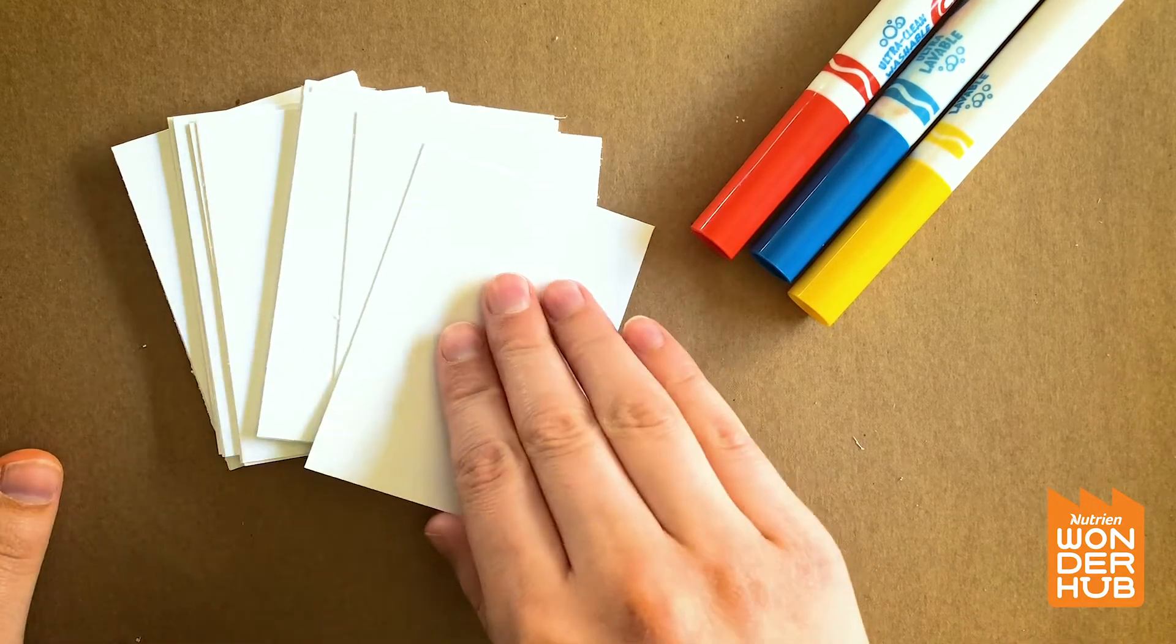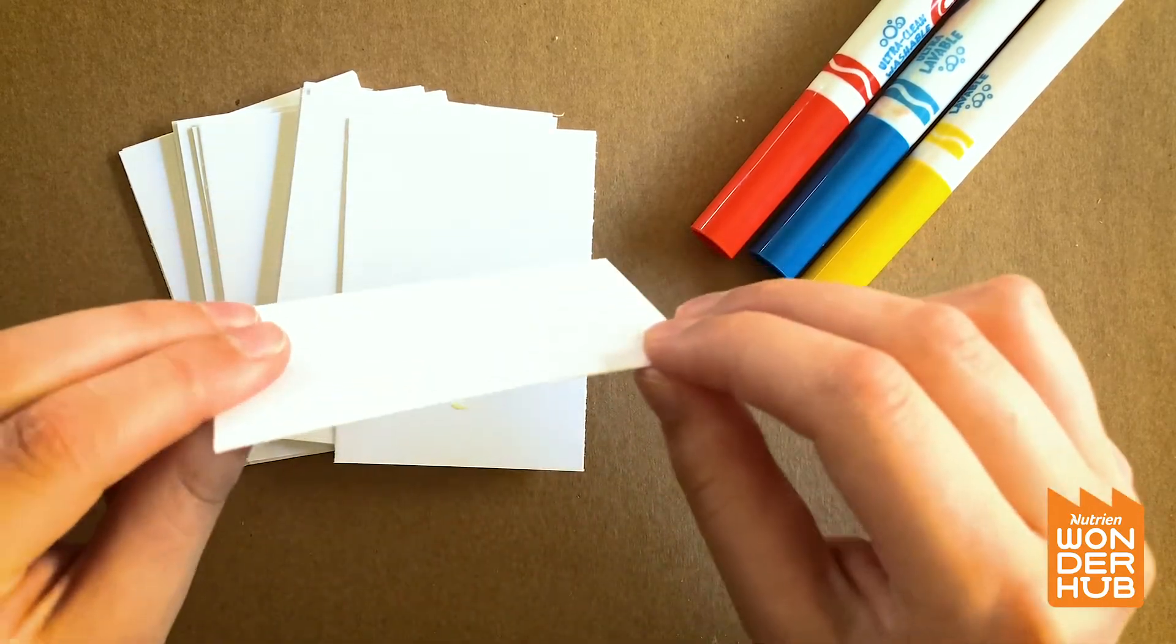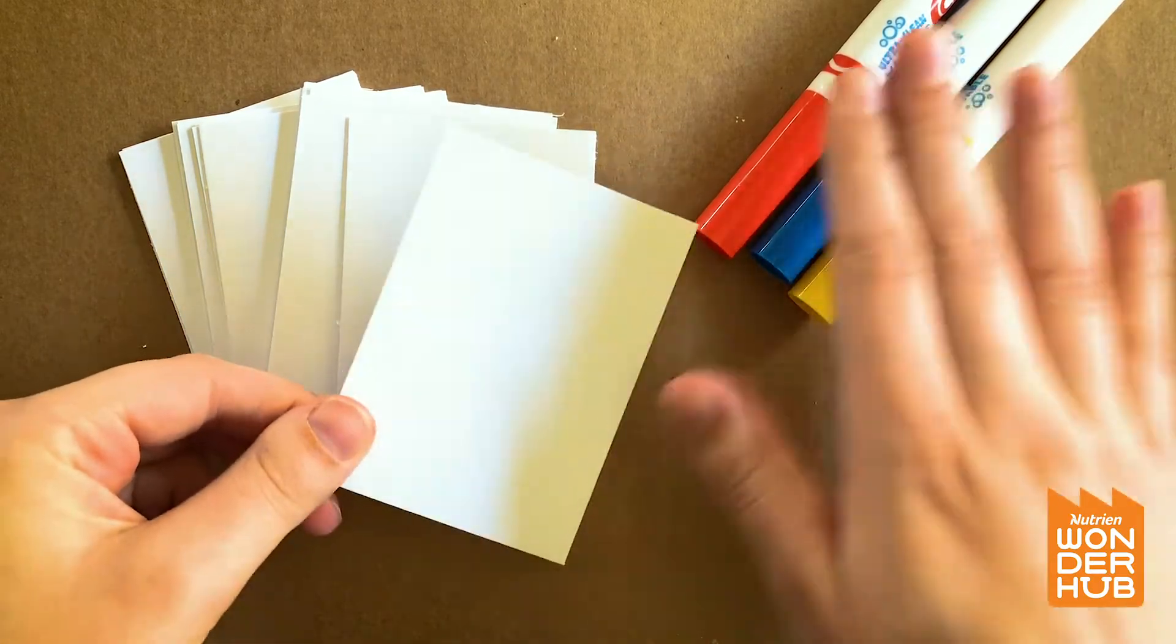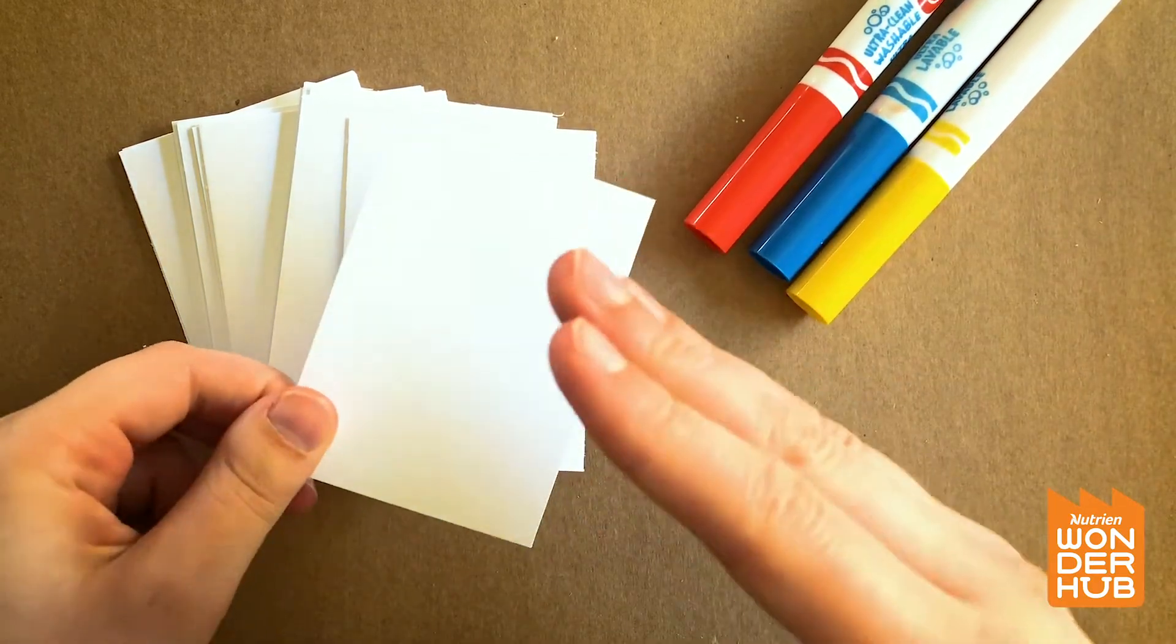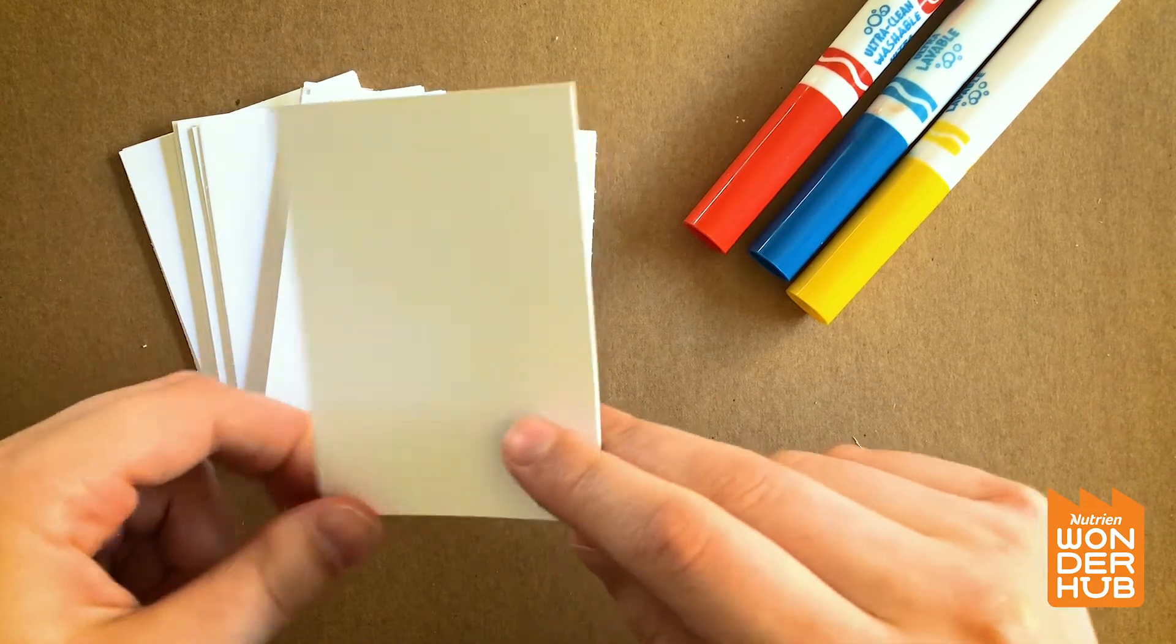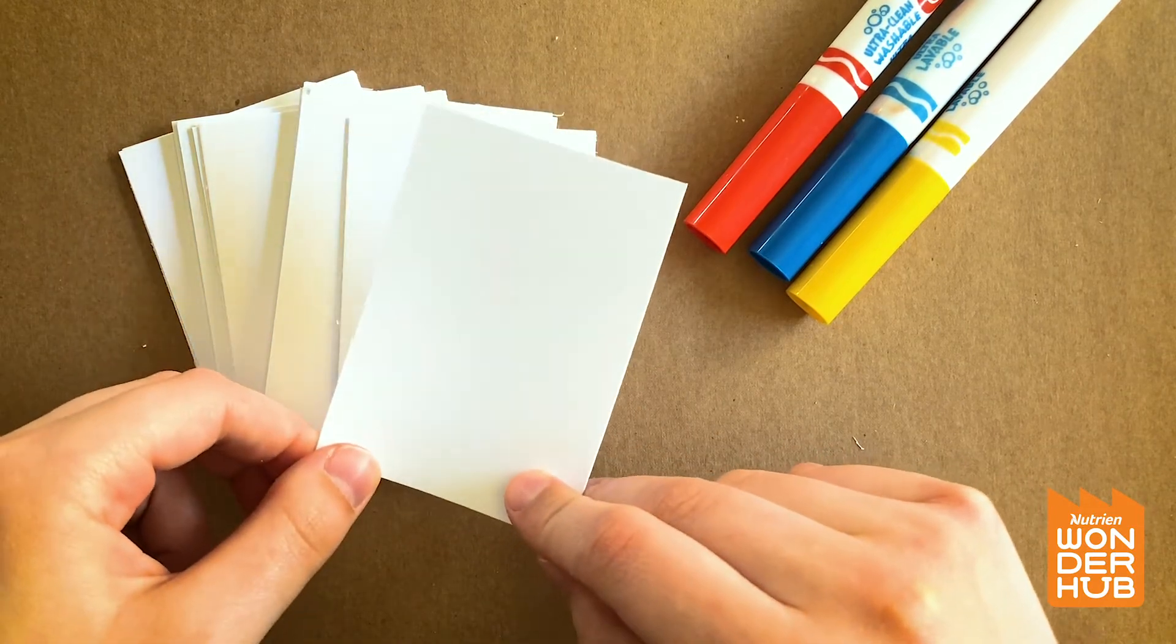The paper I'm using is cardstock so it's a little bit thicker and this just helps to make sure that the markers don't show through, because otherwise people might be able to cheat and see which designs are on which cards.